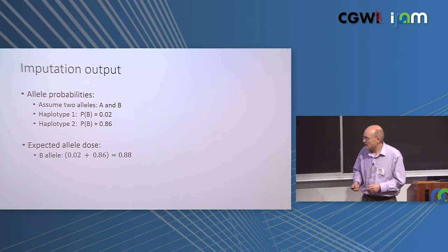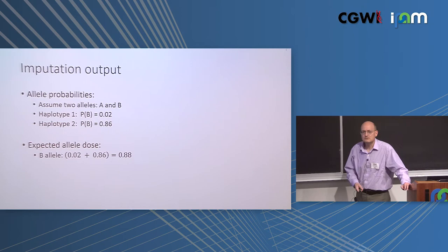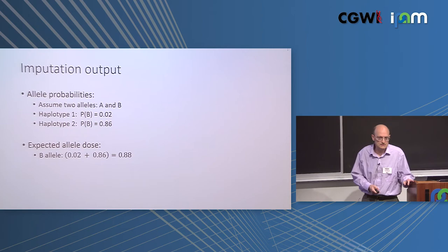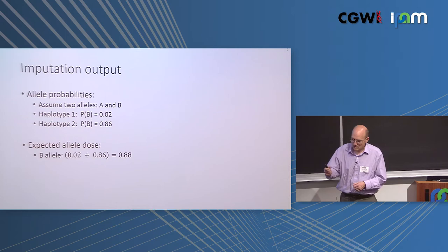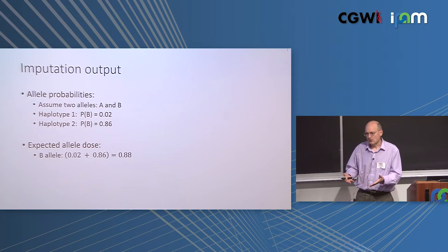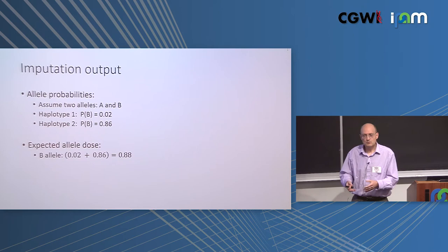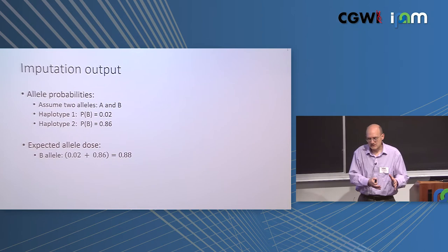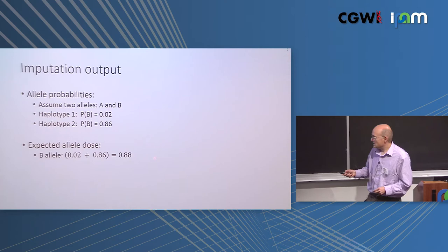Expected allele dose is important for the main application: association testing. When testing for correlation between number of copies of an allele and a trait, that dose is normally 0, 1, or 2 for true genotypes. With imputed data, the predictor is now a real number between 0 and 2, and the same regression-based testing methodology carries through. This makes it very easy to use imputed data in association testing.